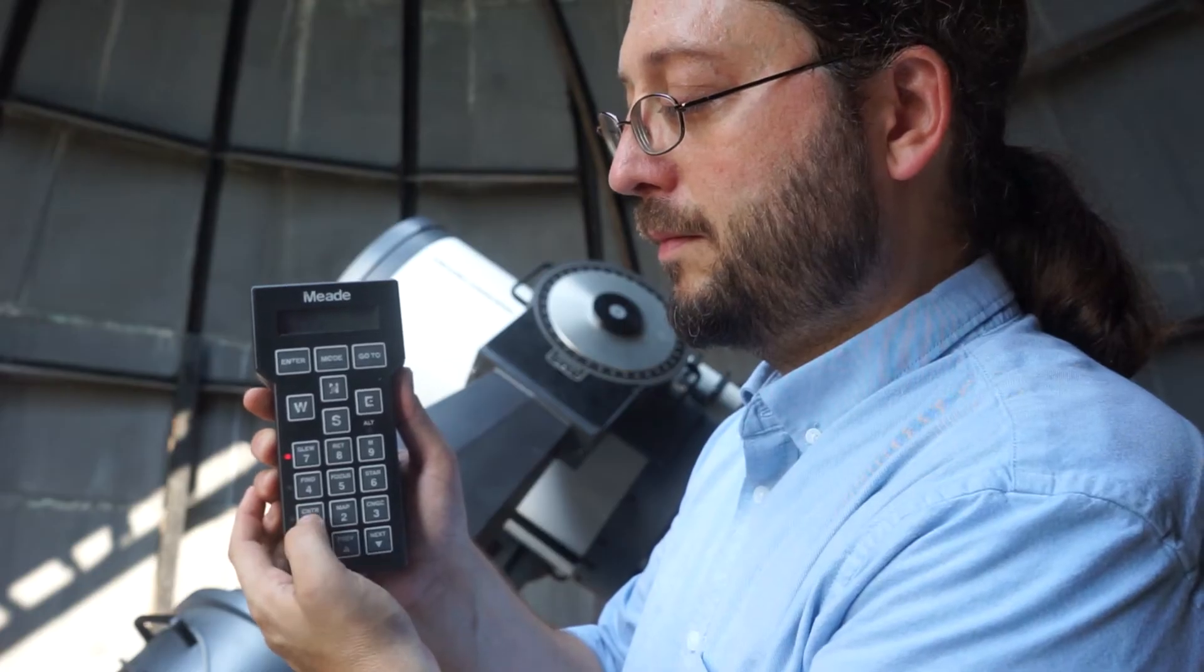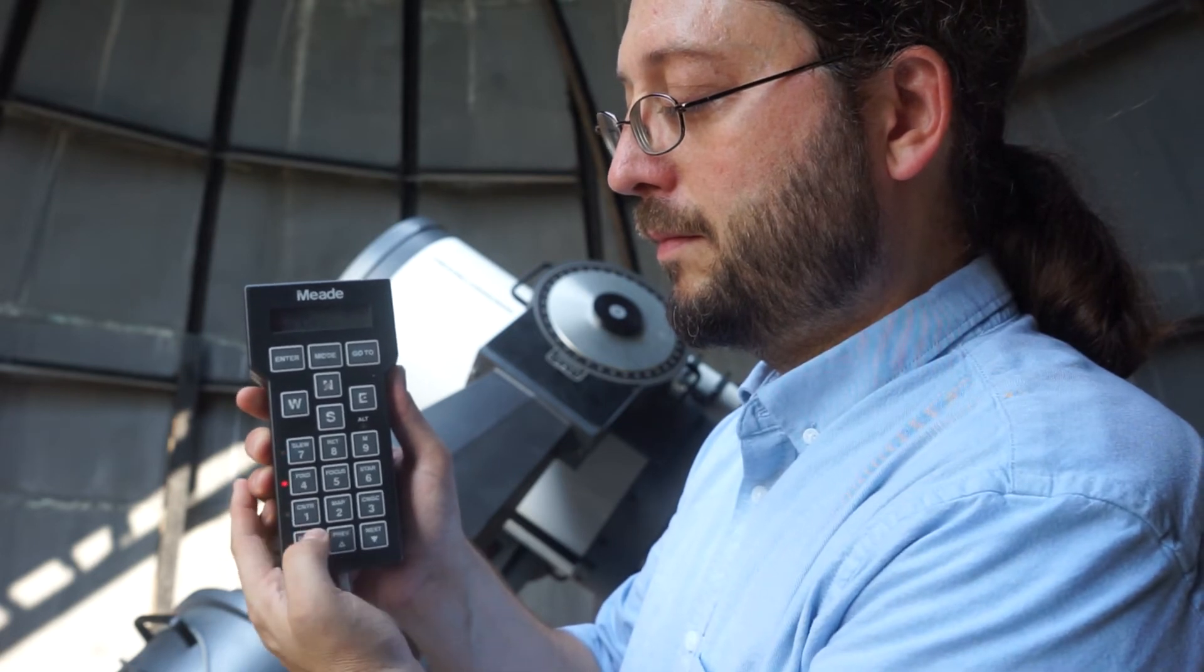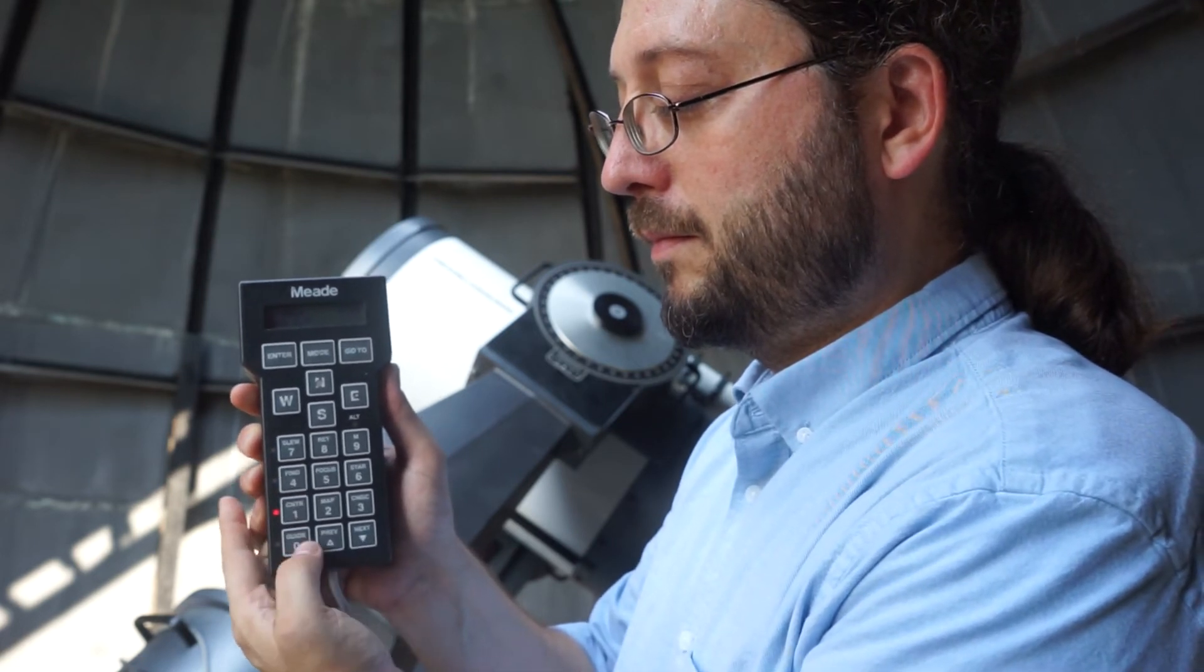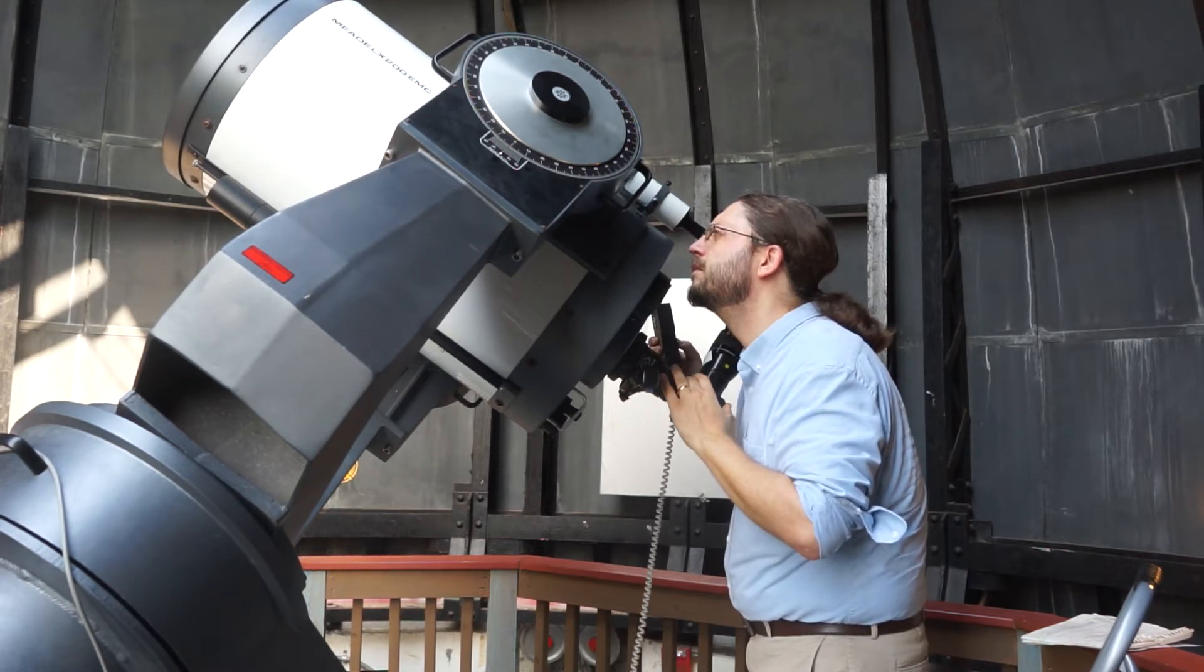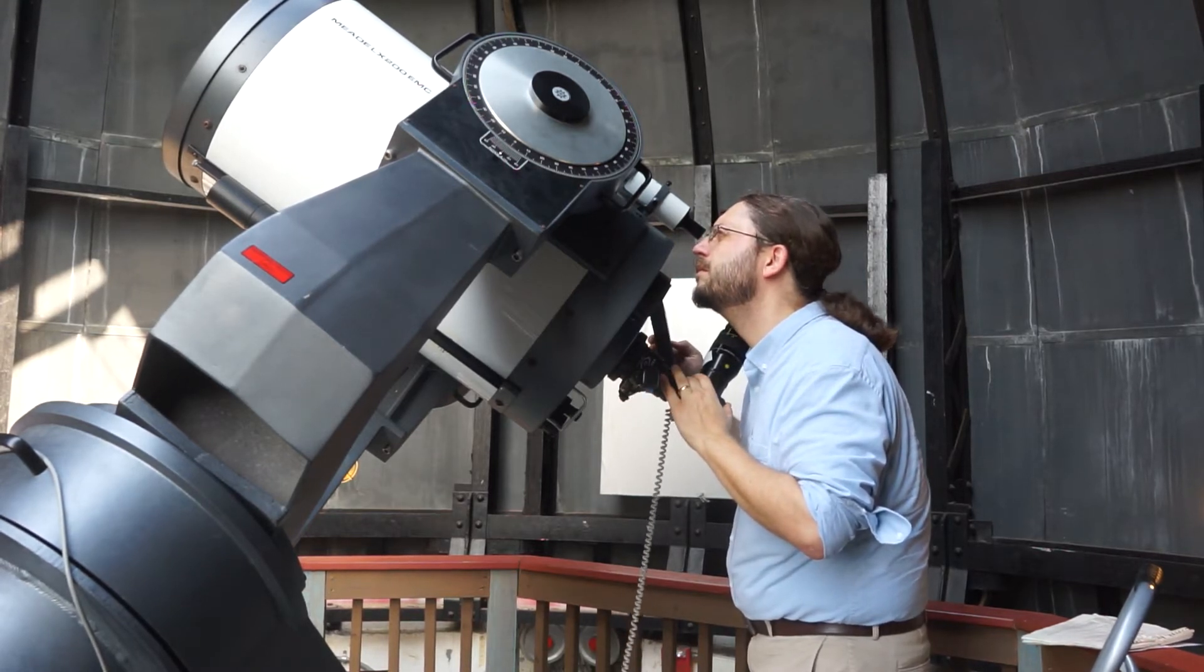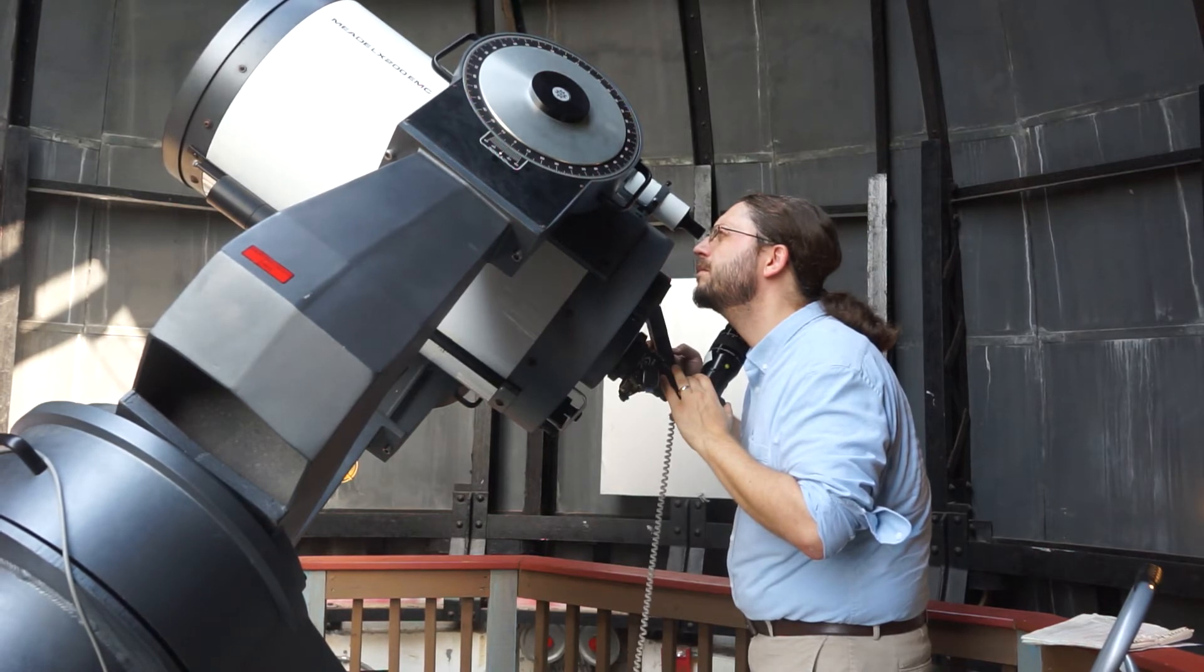You can change the slewing speed using the buttons along the left side of the handbox. Now move the telescope slowly so the star is in the crosshairs of the finder scope. This initial pointing step is pretty tricky and just takes some practice.